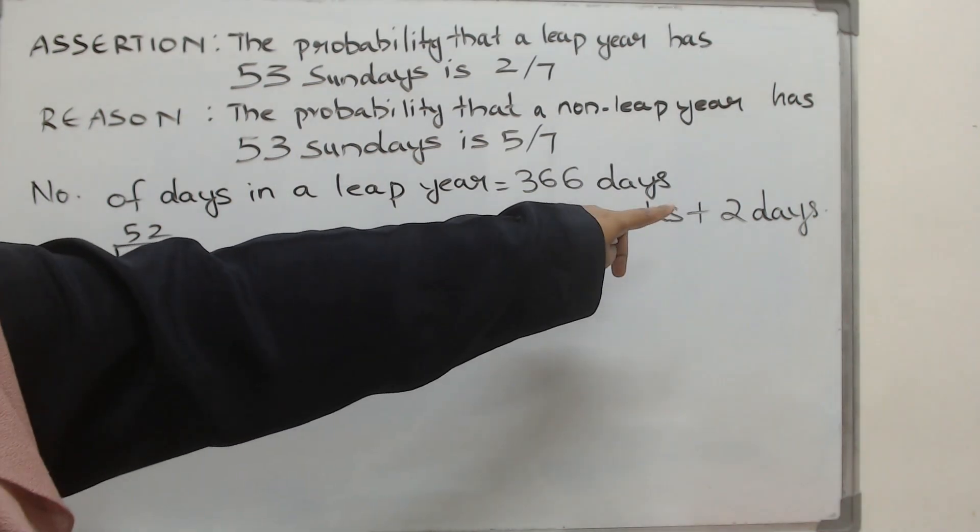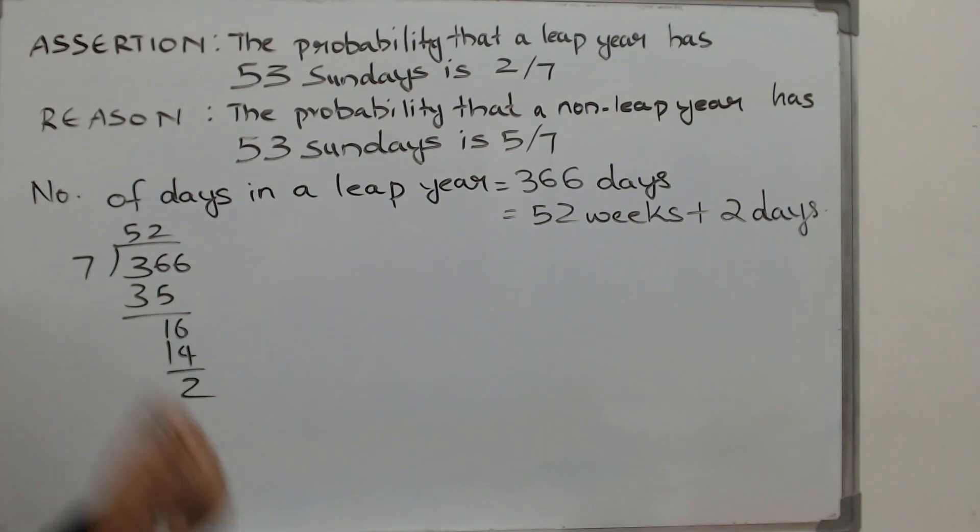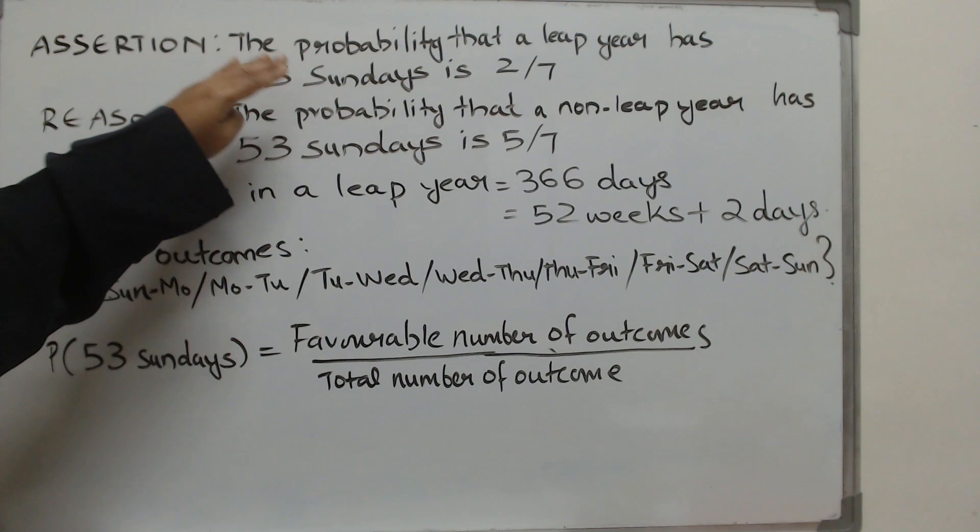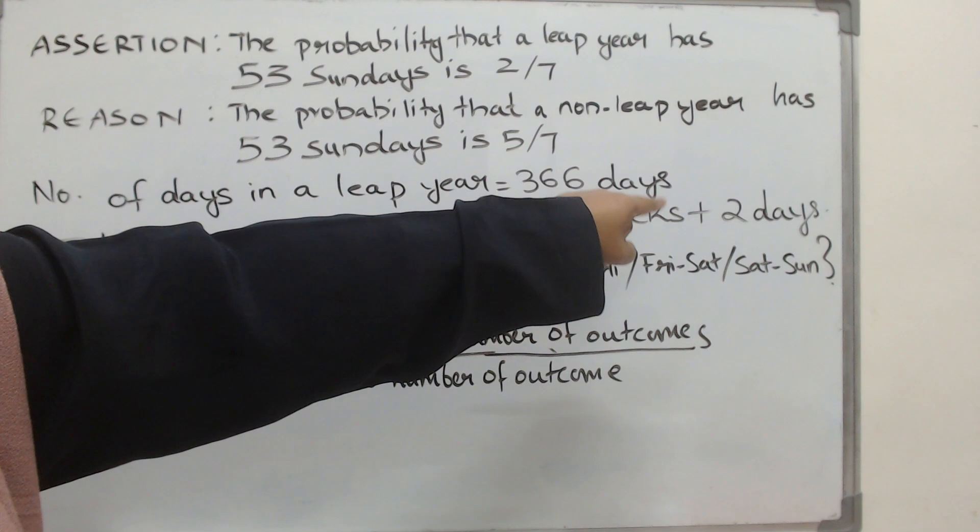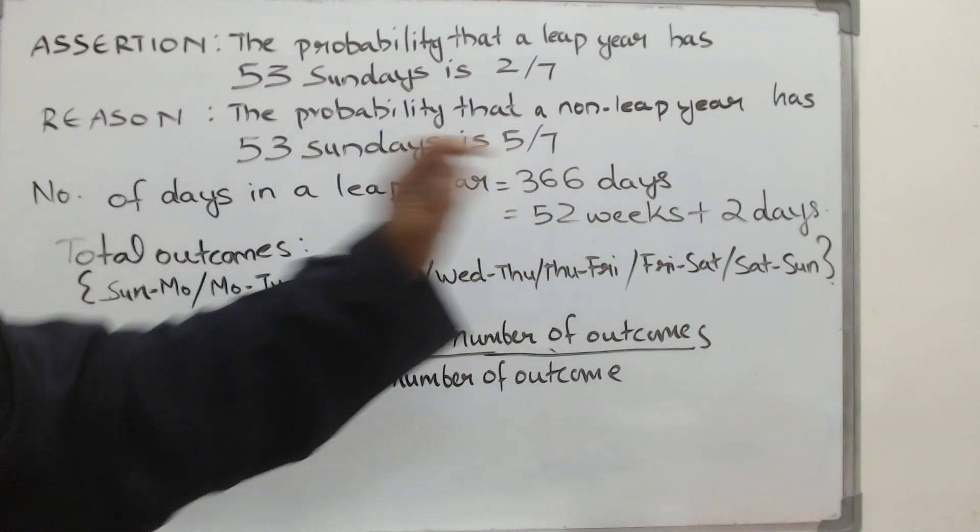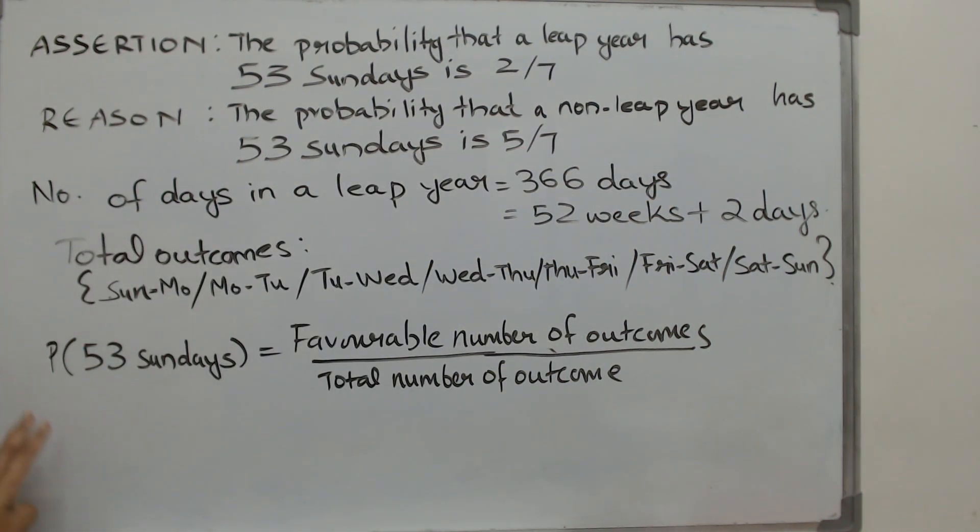Now the question is in this remaining 2 days will you have a Sunday? What are the cases that are possible? Now what is the probability of Sunday falling on one of those remaining 2 days? Now what all cases are possible?